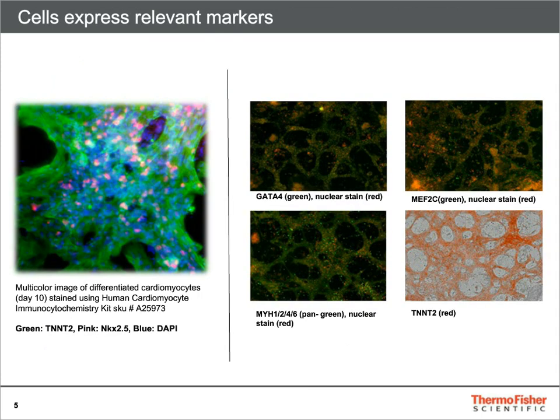Cardiomyocytes generated using the Gibco PSC Cardiomyocyte Differentiation Kit display the appropriate phenotypic markers as shown here via immunocytochemistry. On the left, cardiomyocytes stained using the Human Cardiomyocyte Immunocytochemistry Kit are stained for markers TNNT2 or troponin T cardiac marker, and NKX2.5, a late developmental marker associated with cardiac development. On the right are sheets of cardiomyocytes at day 12 showing GATA4 and MEF2C, which are mid-stage developmental markers, and myosin heavy chain 1, 2, 4, and 8, which are markers of mature cardiomyocytes.